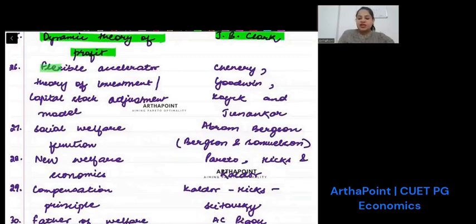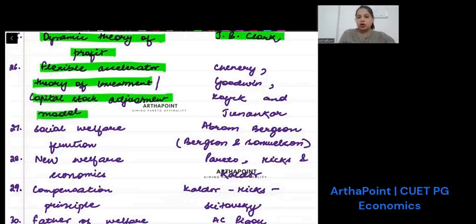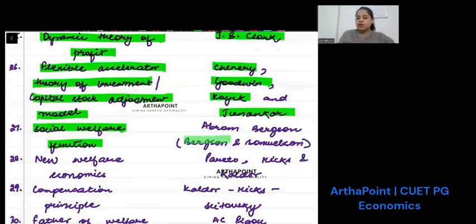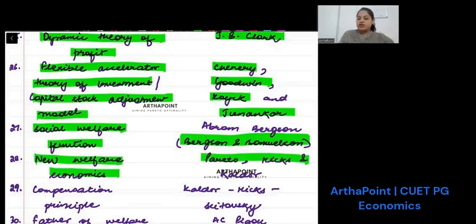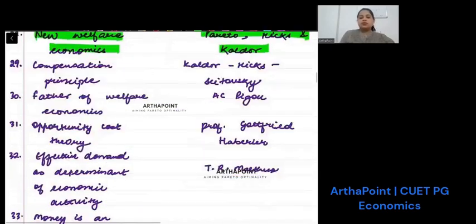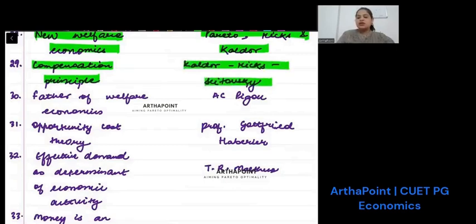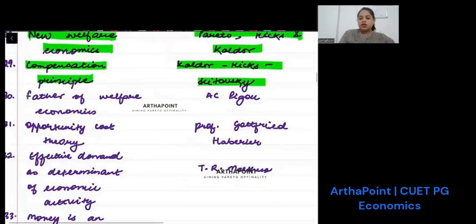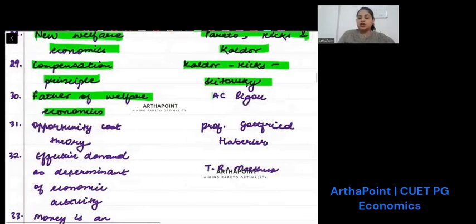Flexible accelerator theory of investment, also called capital stock adjustment model. Welfare function was given by Lenore. Social welfare function was given by Bergsten and Samuelson. New welfare economics is given by Pareto, Hicks, and Kaldor. Compensation principle is given by Kaldor, Hicks and Scitovsky. Father of welfare economics is A.C. Pigou.